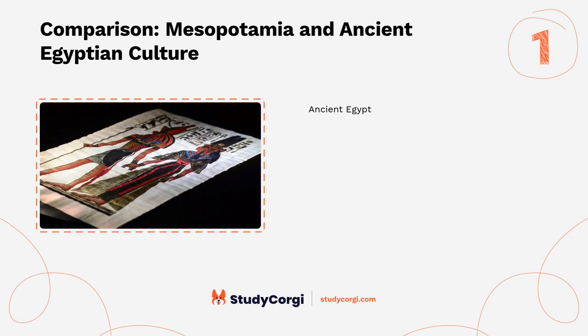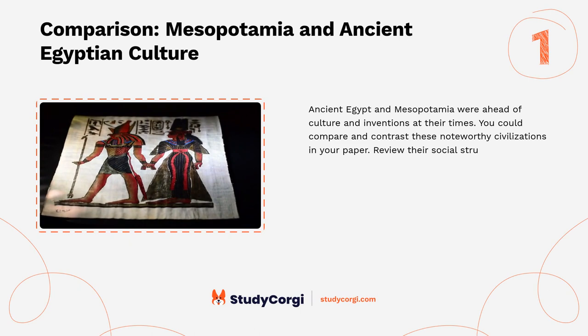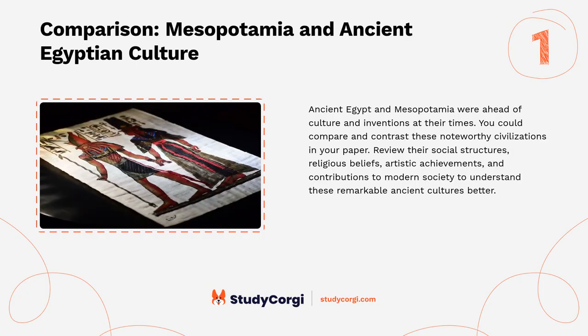Top 10 culture research topics. Comparison: Mesopotamia and Ancient Egyptian culture. Ancient Egypt and Mesopotamia were ahead in culture and inventions at their times. You could compare and contrast these noteworthy civilizations in your paper, reviewing their social structures, religious beliefs, artistic achievements, and contributions to modern society to better understand these remarkable ancient cultures.